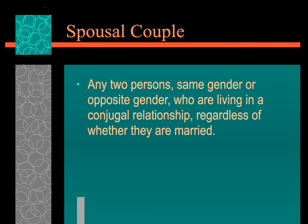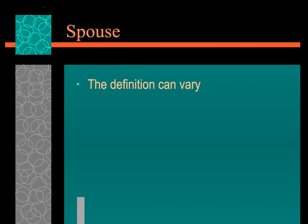With family law, what is a spousal couple? Essentially, a spousal couple is any two persons — no matter if they are the same gender or opposite gender — who are living in a conjugal relationship, regardless of whether or not they have been married. The definition of a spouse can vary, but it always refers to one and one person; it never includes more than two people, whether male-female, male-male, female-female, transgender, and so on.